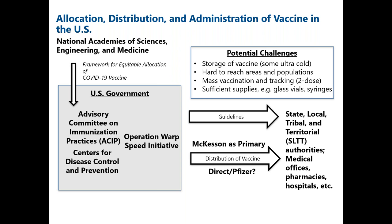We are going to have some challenges in distribution. Hard-to-reach areas, hard-to-reach populations, and tracking dosage will be significant issues. Most of these vaccines — with the exception of the Johnson & Johnson vaccine — are two-dose regimens. For Pfizer, the second dose is needed at 21 days; for Moderna, at 28 days. Tracking and monitoring that two-dose regimen is going to be quite important. Alongside the vaccines are all the equipment needed to administer: glass vials, syringes, and appropriate PPE for healthcare workers.